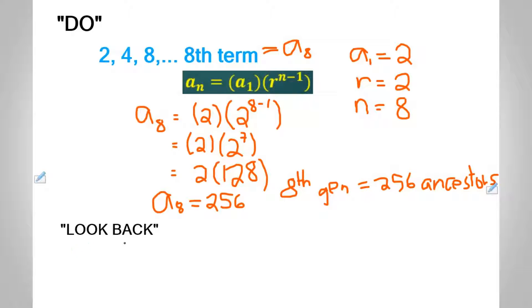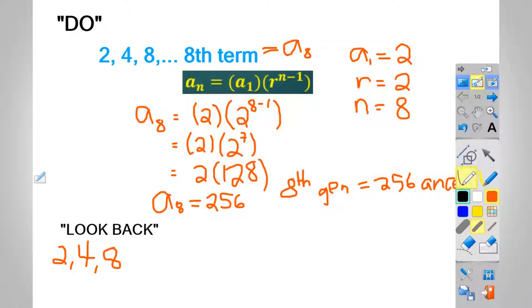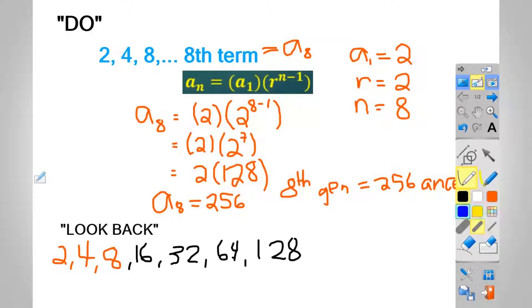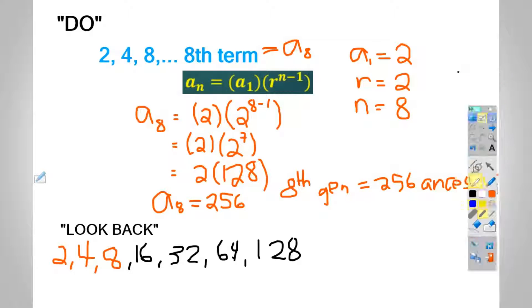To check if our answer is correct, we simply continue the pattern. We start with 2, 4, 8, then we multiply 8 by 2, so that will be 16 times 2 will be 32 times 2 will be 64 times 2 will be 128. And as you can see, the eighth term of this sequence will be 256. Therefore, our answer is correct. Good job, try this one.